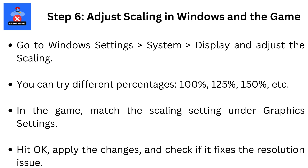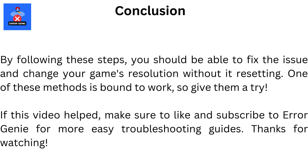Step 6: Adjust scaling in Windows and the game. Go to Windows Settings, System, Display, and adjust the scaling. You can try different percentages — 100%, 125%, 150%, etc. In the game, match the scaling setting under Graphic Settings. Hit OK, apply the changes, and check if it fixes the resolution issue. By following these steps, you should be able to fix the issue and change your game's resolution without it resetting.